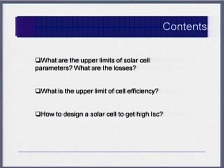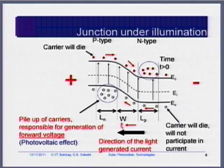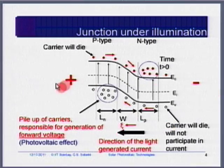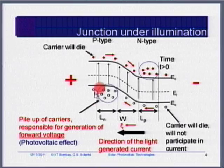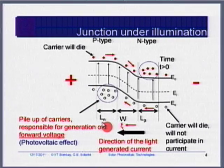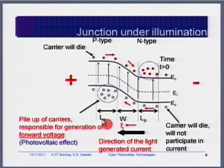How do you design a solar cell to get the highest short circuit current? The next lecture will cover how to get the highest open circuit voltage. To recap: p-side gets positive, n-side gets negative. Not all carriers generated by light contribute to the current — some recombine. Therefore, the minority carrier diffusion lengths — for electrons on the p-side and for holes on the n-side — are important.